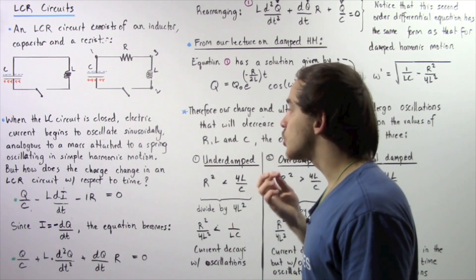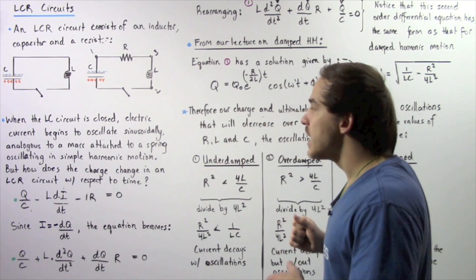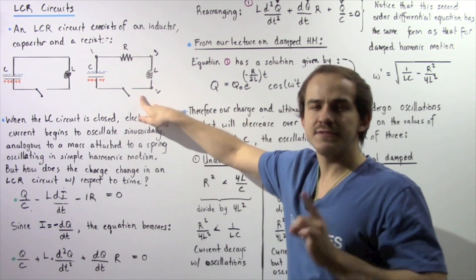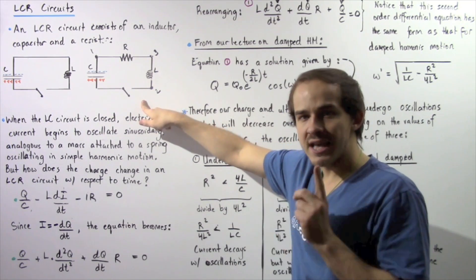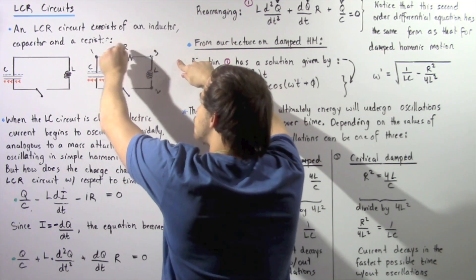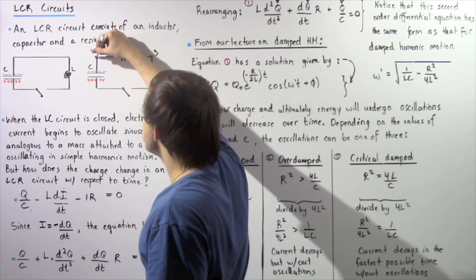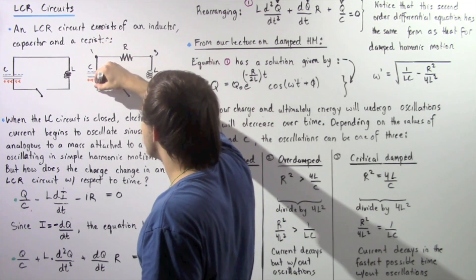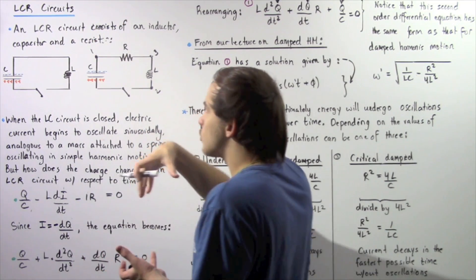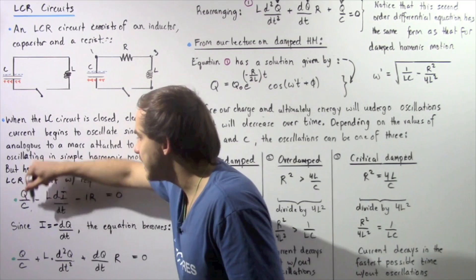Now, how exactly does the charge on the capacitor and the electric current inside our LCR circuit change with respect to time? We close the switch and apply Kirchhoff's second rule, which tells us that going around a closed loop, the sum of all voltage differences equals zero. Starting at position one and moving across the capacitor to position two, there is an increase in voltage given by Q/C.